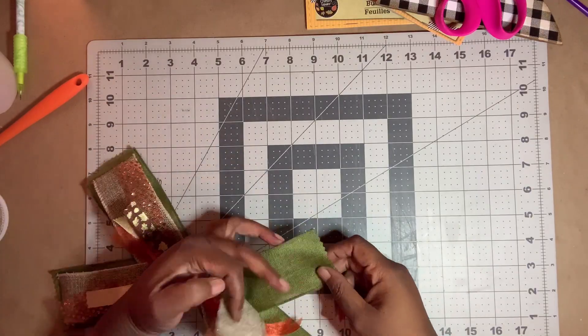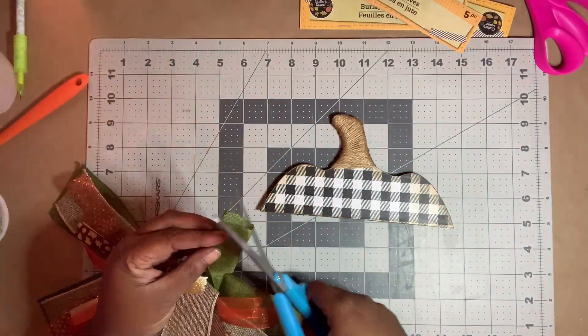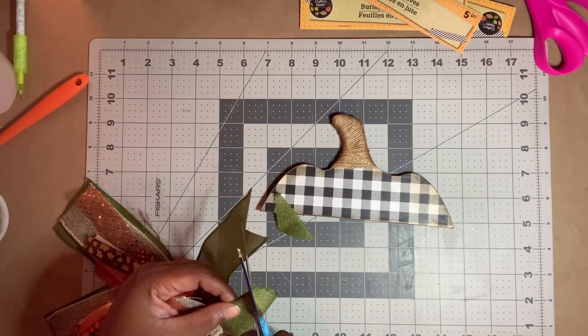Once the bow was assembled, I checked it for size and cut it down as needed, dovetailing and trimming the ends.